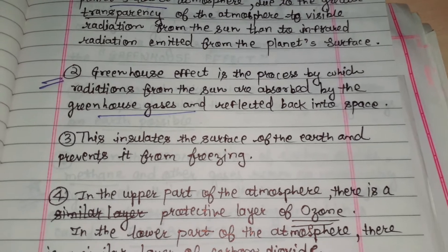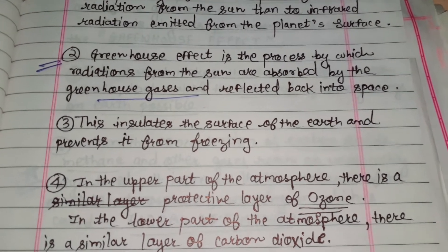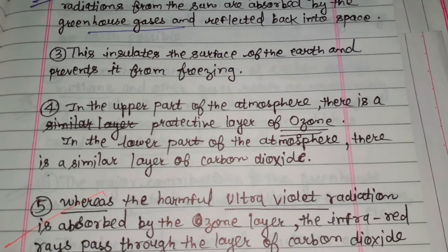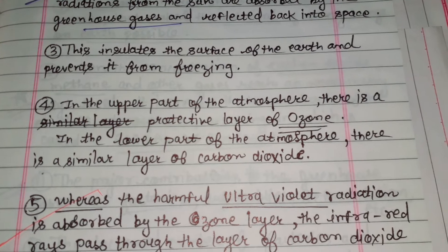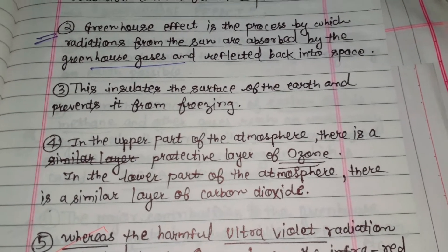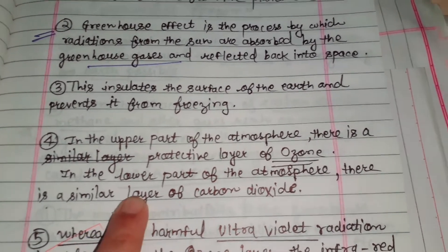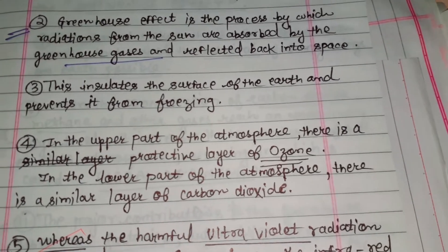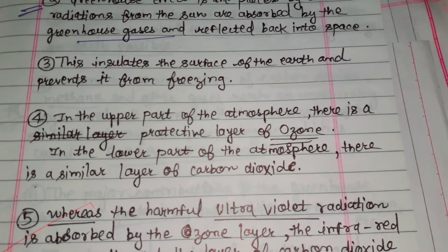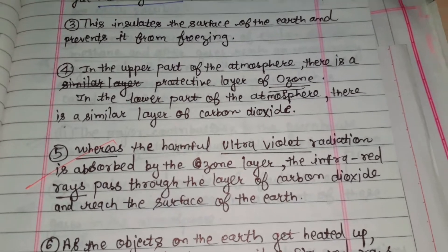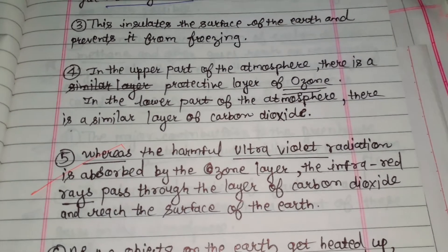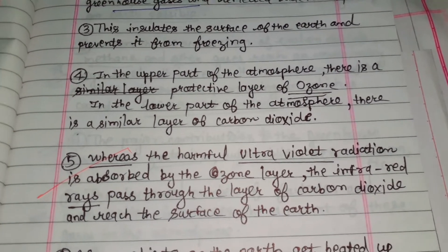This insulates the surface of the earth and prevents it from freezing. In the upper part of the atmosphere, there is a protective layer called the ozone layer. In the lower part of the atmosphere, there is a similar layer of carbon dioxide. The harmful UV rays — the ultraviolet radiation — are absorbed by the ozone layer.